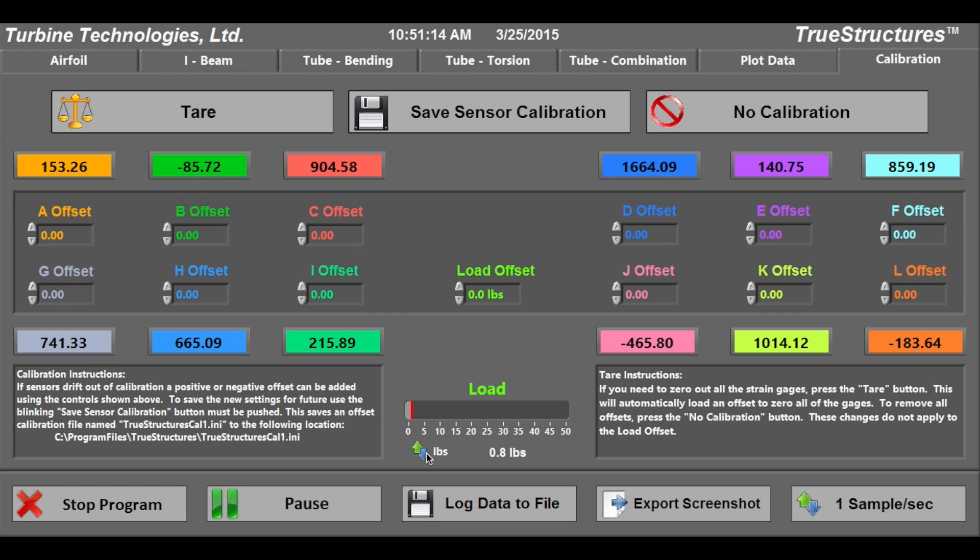Software strain gauge calibration allows users to load an offset value for each strain gauge. And users can also automatically tare all strain gauges to a zero point for easy on-screen graphing and analysis.